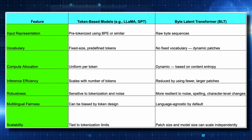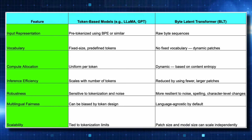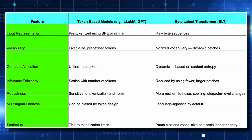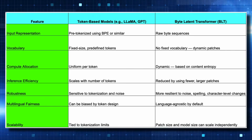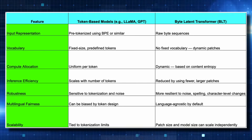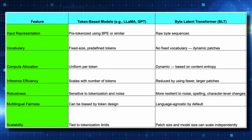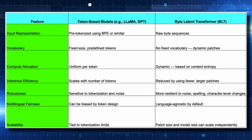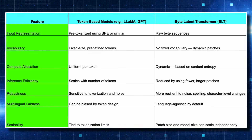In terms of robustness, this model is more resilient to noise, spelling errors, or character-level changes, while LLaMA-style token-based models are more sensitive to tokenization artifacts — adding a dot or an uppercase letter can have an impact. In terms of multilingual fairness, BLT can be language-agnostic because it looks at bytes rather than tokens. And finally, this model scales much better than traditional token-based models.